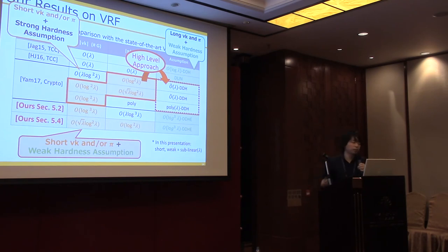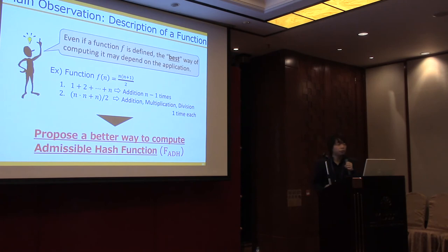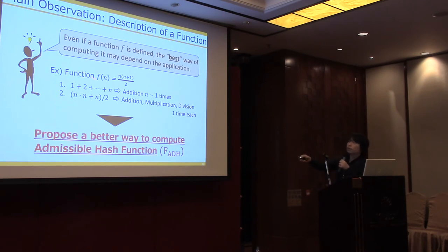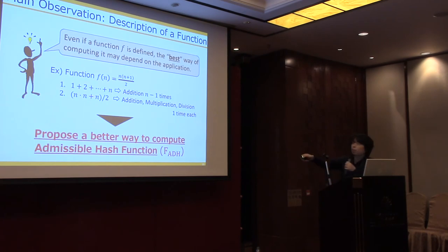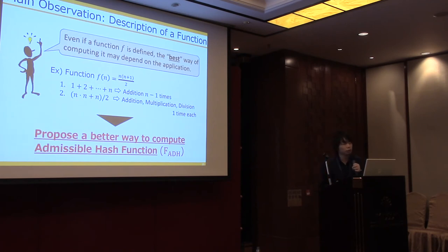This is just our starting point; the actual construction is quite different. The main observation of our work is that even if a function f is defined uniquely, the best way of computing it may depend on the application. For example, the sum 1 + 2 + ... + n is defined uniquely, but it can be computed by adding 1 to n sequentially or via the closed form n(n+1)/2. Depending on the algebraic structure of the cryptographic primitive, perhaps we can't divide, so one method may be better. This general intuition motivates us to propose a better way to compute admissible hash functions.